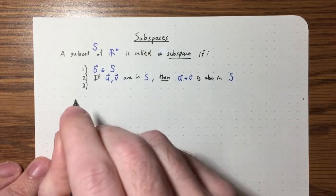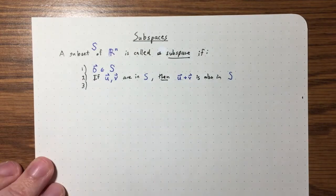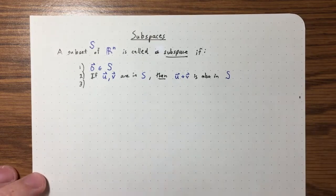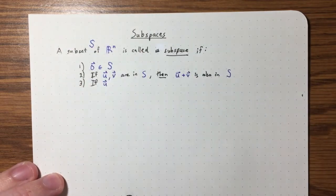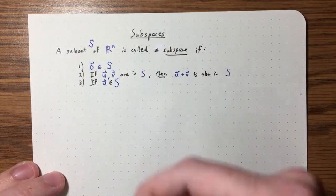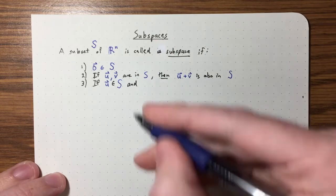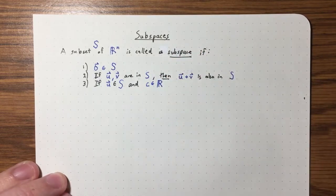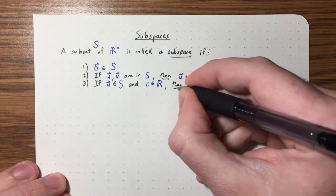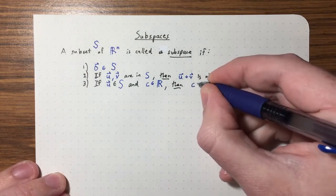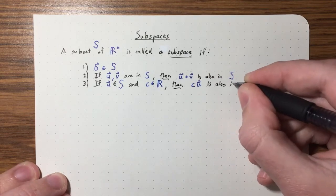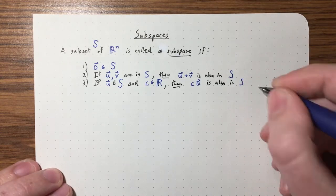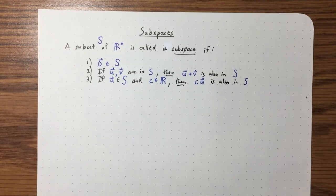The third condition: I want to be able to scalar multiply any vector by any scalar and still end up in my subspace. So if U is in S and C is any real scalar, then C times U also needs to be in the subset S. So subspaces are very special subsets — they're subsets that also require these three conditions.